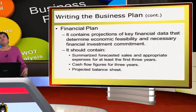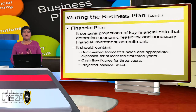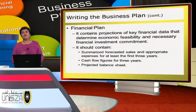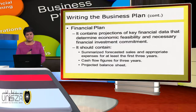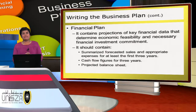The last portion is the financial plan. The financial plan normally contains projections of key financial data that determine economic feasibility and necessary financial investment commitments. It should contain summarized forecasted sales and appropriate expenses for at least the first three years, cash flow figures for the first three years, and a projected balance sheet.